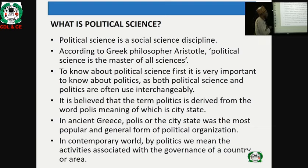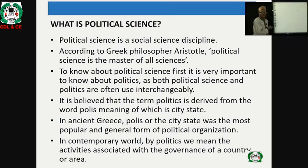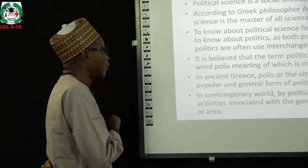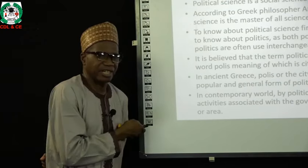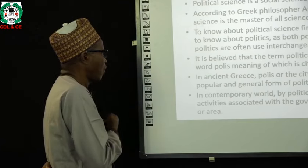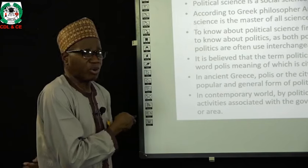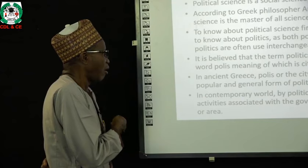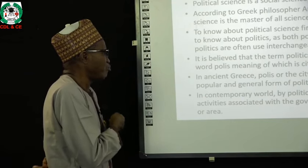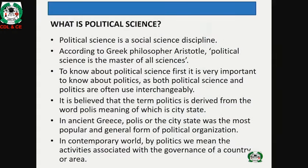To understand political science, it is important first to know about politics, as both terms are often used interchangeably. The term 'politics' is derived from the Greek word 'polis,' meaning city-state. What we call politics today, the ancient Greeks called 'polis.' In ancient Greece, the polis or city-state was the most popular and general form of political organization.